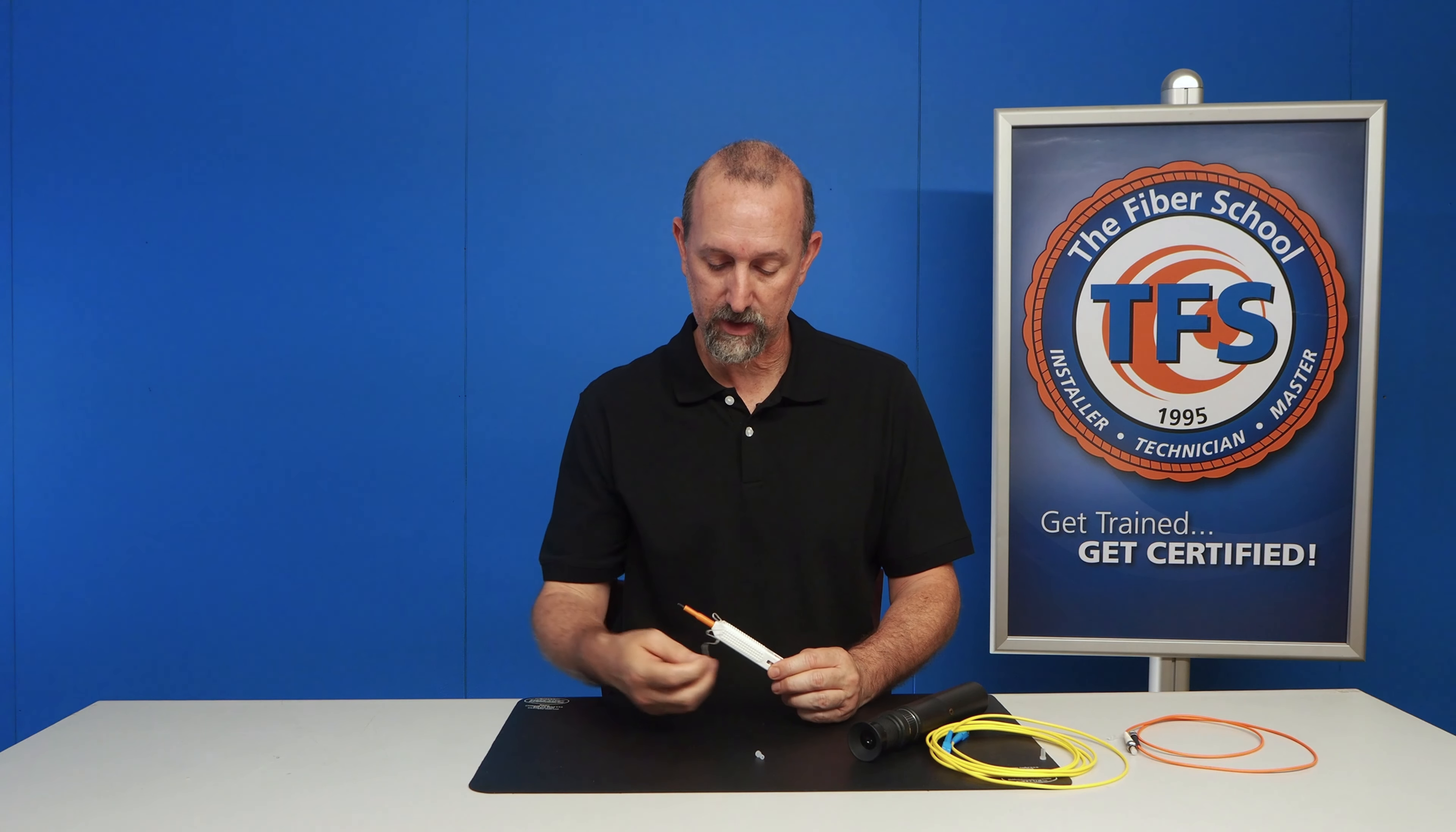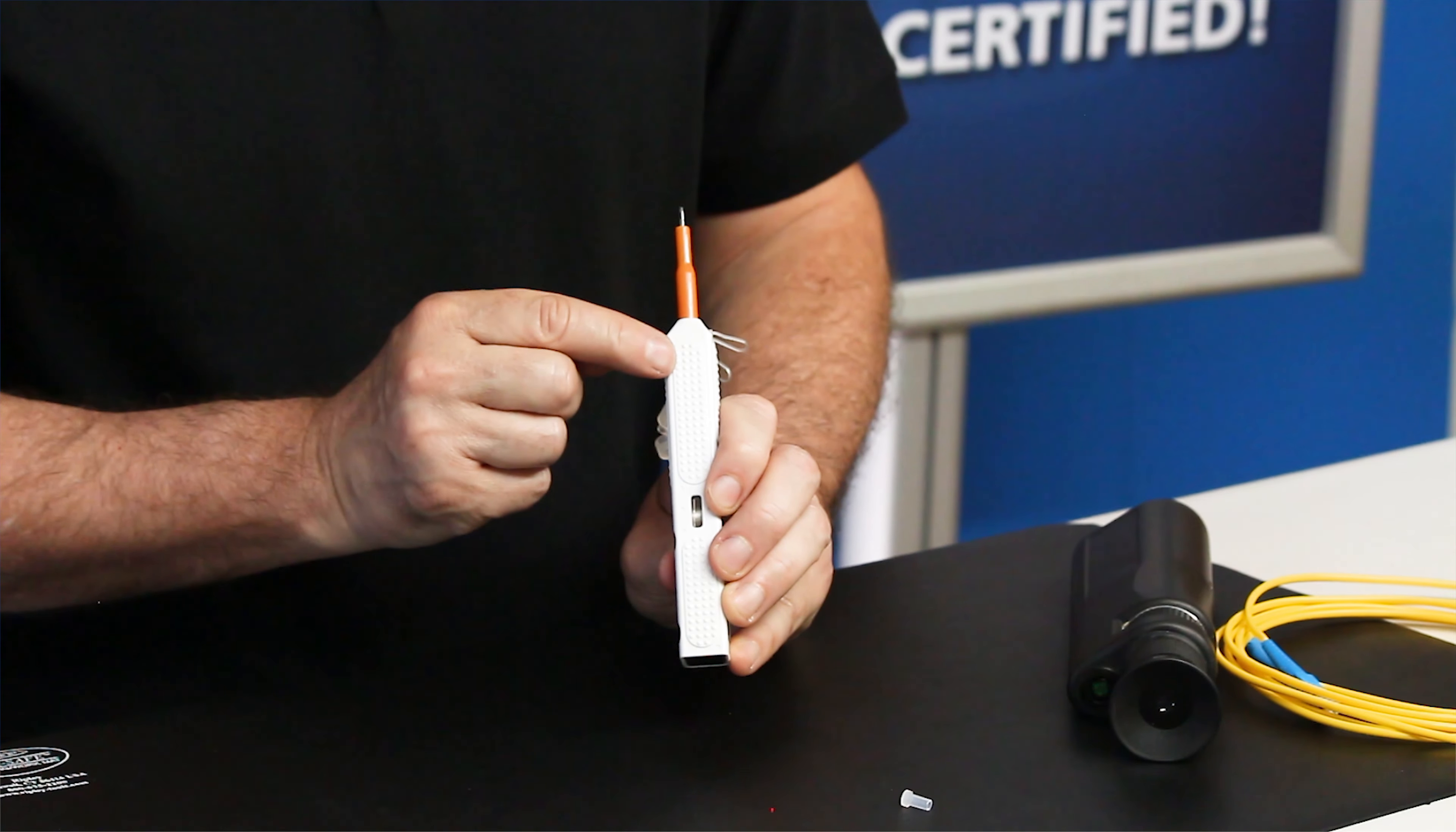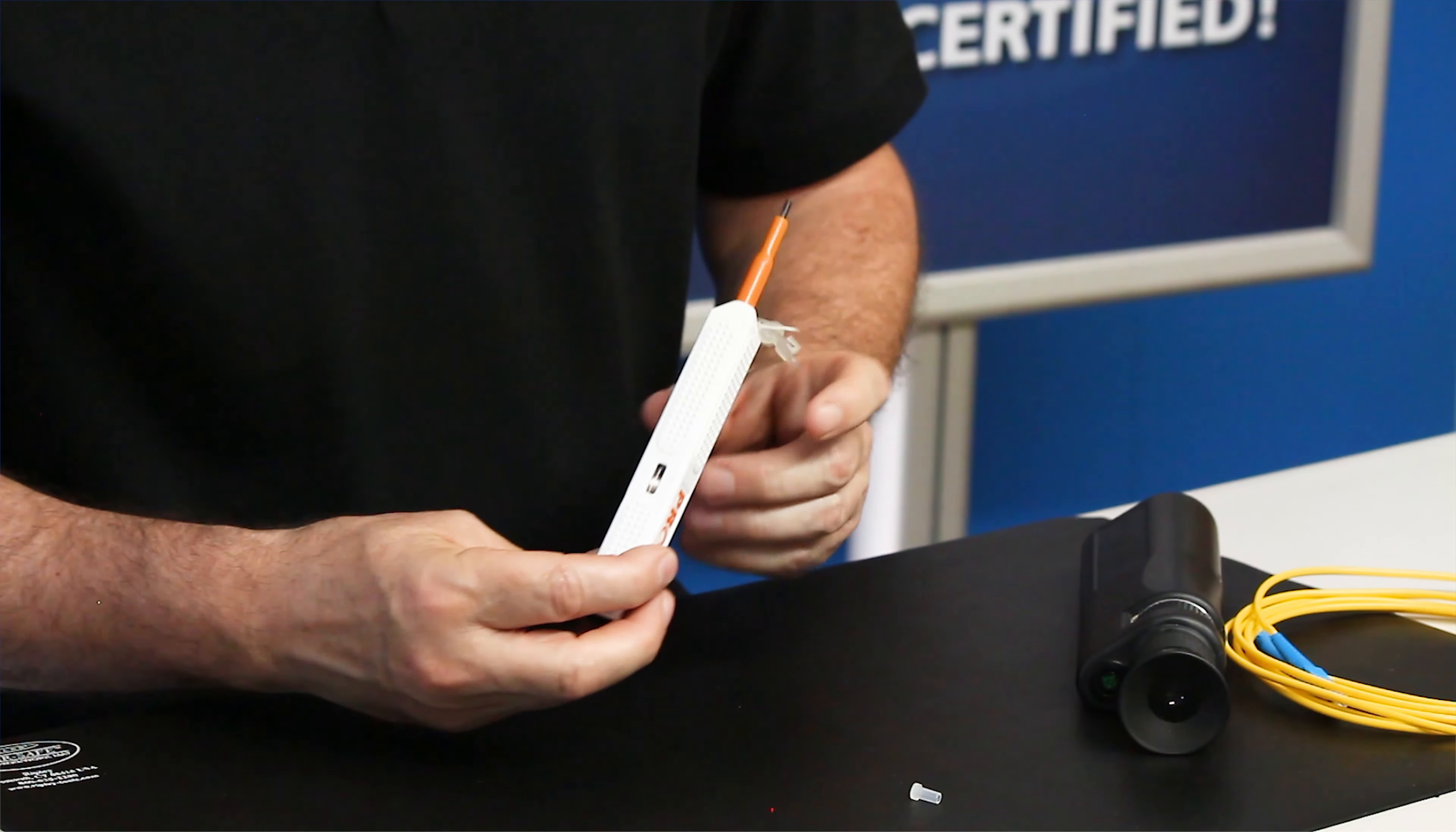So as far as cleaning it and the operation of how the quick click works, there's string inside, and you can see right here that there's a little reel that has a string. I call it string, like dental floss, and that goes up the connector, up the cleaning stick, goes to the end of the tip, and it goes straight down.